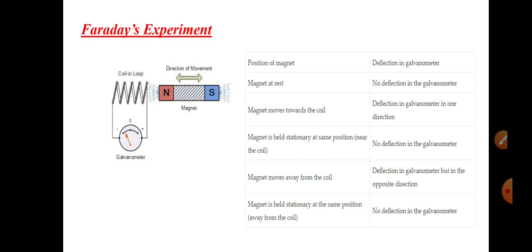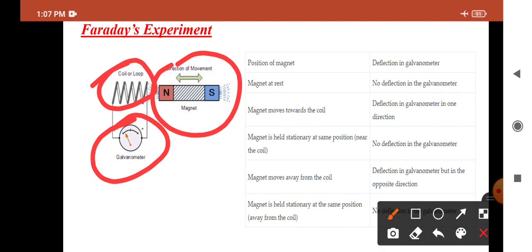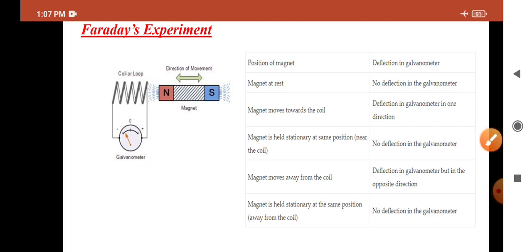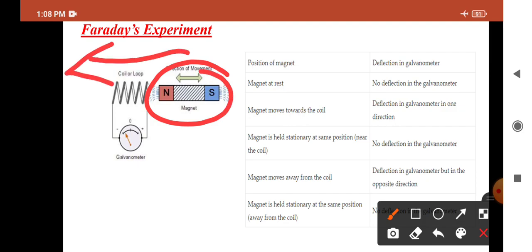What is Faraday's law? Faraday did one experiment where he took one magnet and one coil connected to a galvanometer. First, when the magnet is at rest, there is no deflection in the galvanometer — the needle is at zero position. But when the magnet is moved towards the coil, the galvanometer deflects and the needle deflects in one direction. After that, when the magnet is held stationary, the needle returns to zero position.